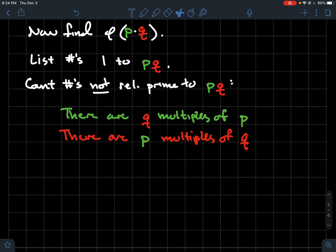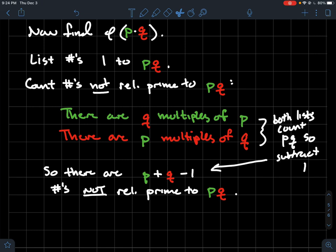And again, be careful. It's natural to think, so there's q plus p total numbers that are not relatively prime to q times p. But you have to subtract 1 again. Because in the green list and in the red list, you counted pq in each of those. So again, you count pq in both of those lists right there, so you need to subtract that 1.